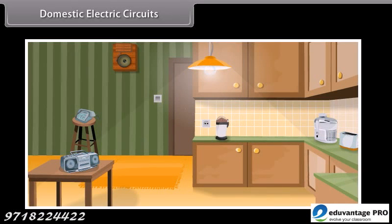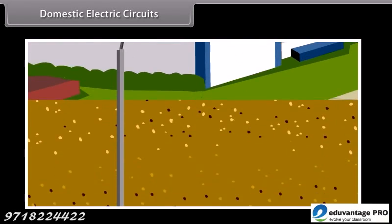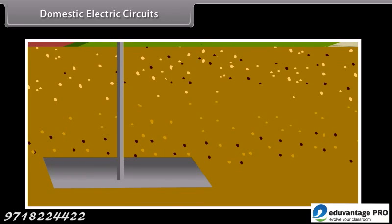There are different circuits used for different appliances being used in the house. The earth wire is connected to a metal plate deep into the earth to avoid receiving any severe shock in case of any leakage of current while using the appliances.